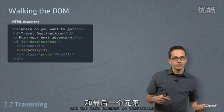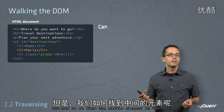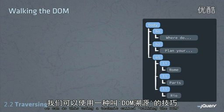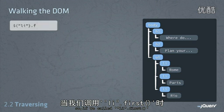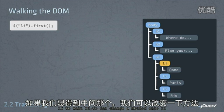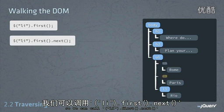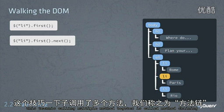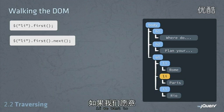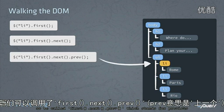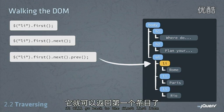We know how to find the first element and the last element with traversing, but how might we find the middle element in this list? We can do this using a technique called walking the DOM. So if we called li.first, it's going to give us that first list item, and if we wanted, we could chain another method onto it. So we could call li.first.next, and that would return the middle list item. This technique of calling multiple methods together is called method chaining. We could keep on chaining more methods — so if we called first.next.prev, which stands for previous, it would go back to the first list item.